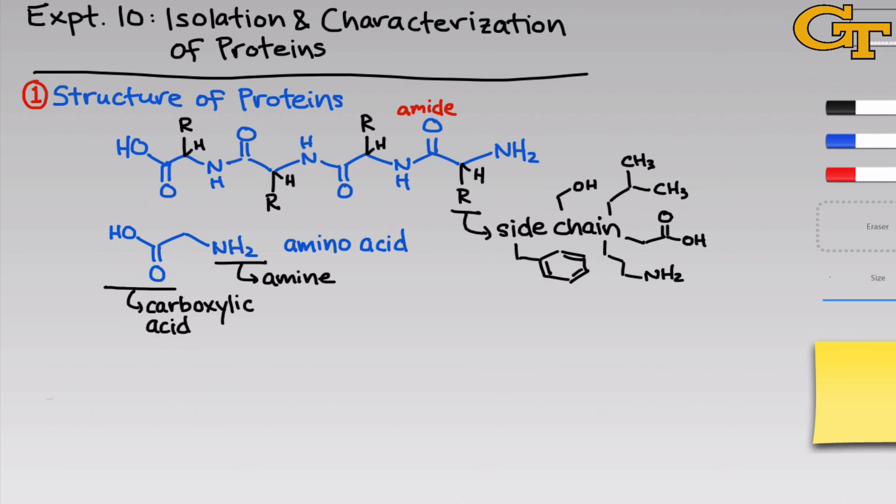Just a few examples of possible side chains are given here. They can contain carbon, oxygen, nitrogen, and even elements like sulfur, in a variety of configurations, and they can have a variety of polarities that lead to all kinds of different intermolecular forces.